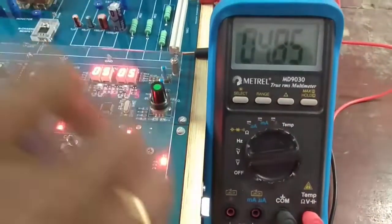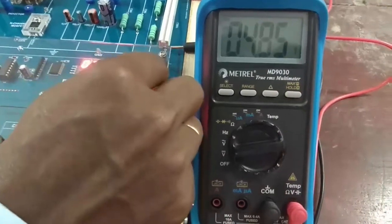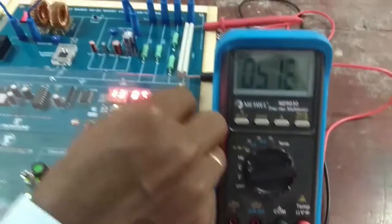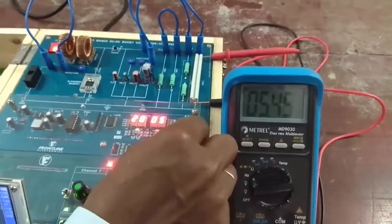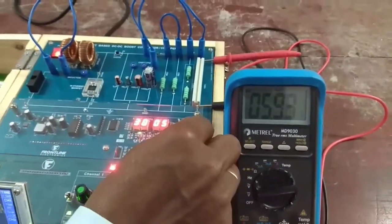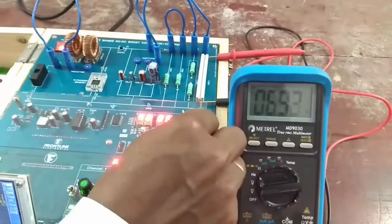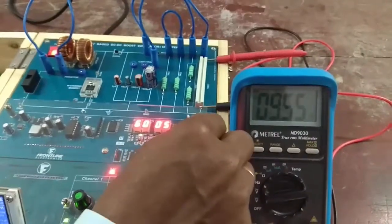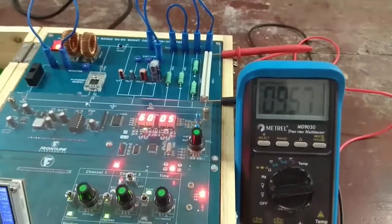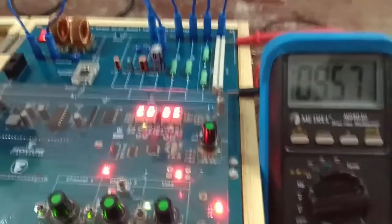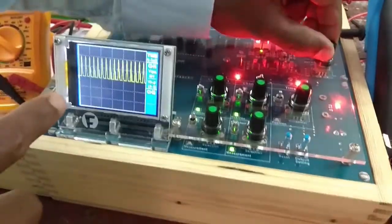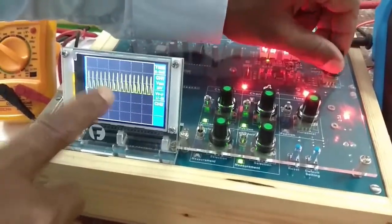Then my duty cycle can be varied by varying this knob. At the same time, my output is going to get varied. At the same time in the CRO, my duty cycle is going to get varied. It can be displayed in this CRO display.